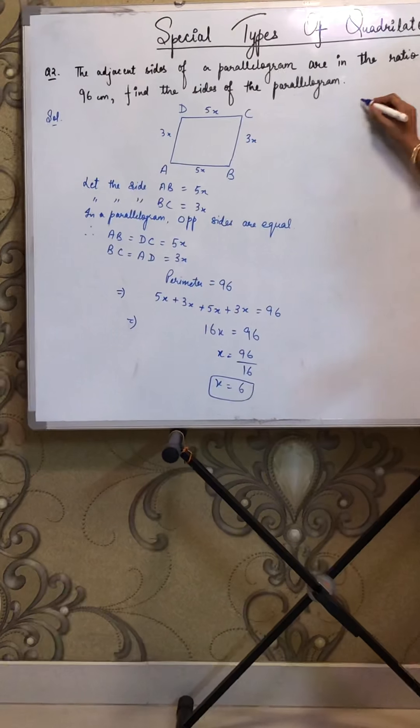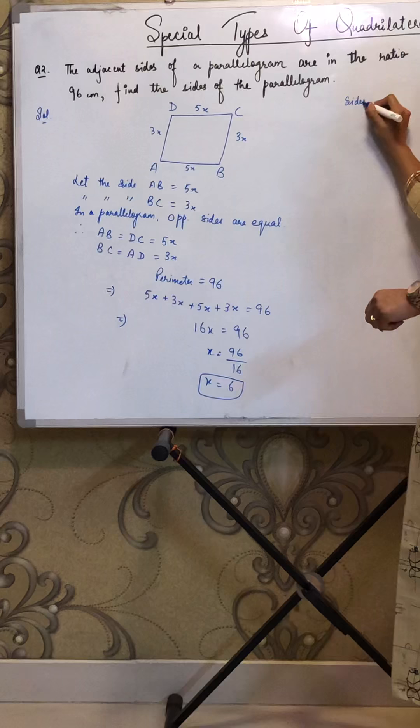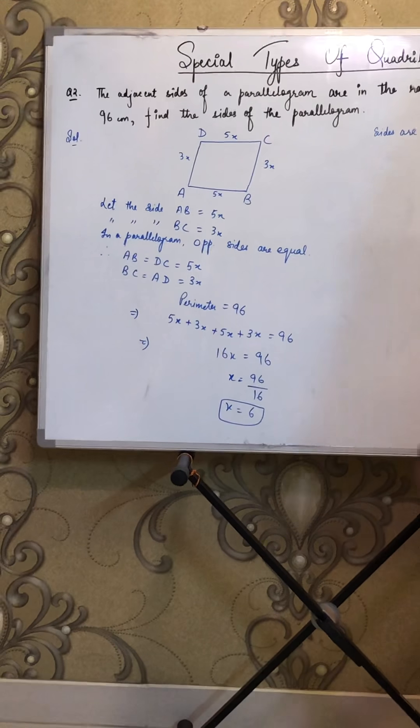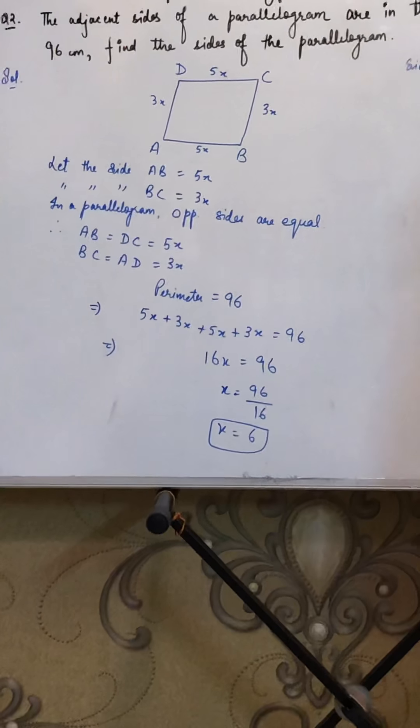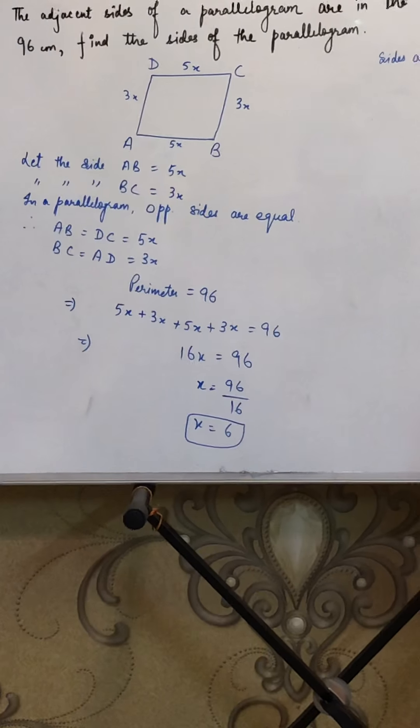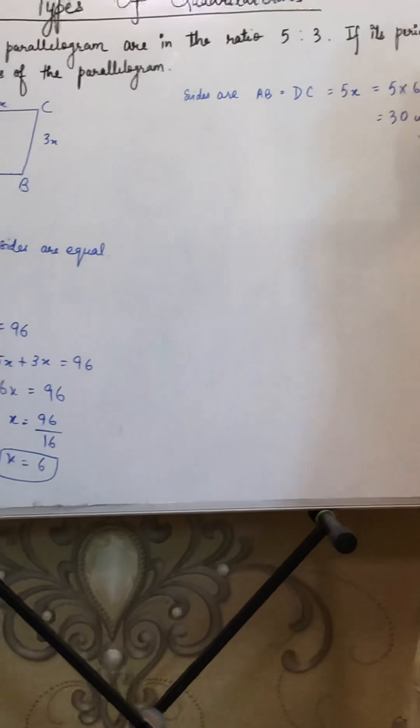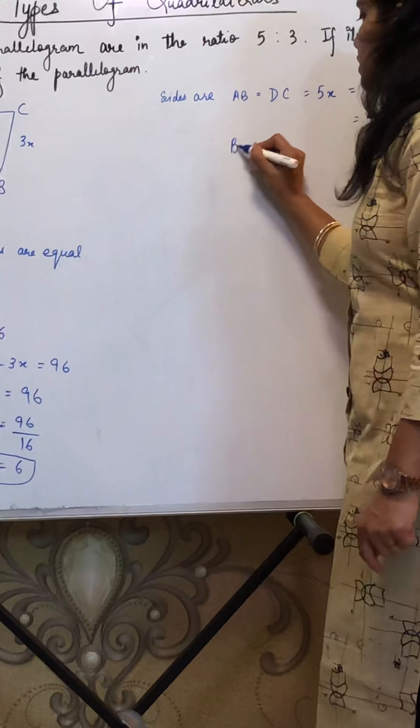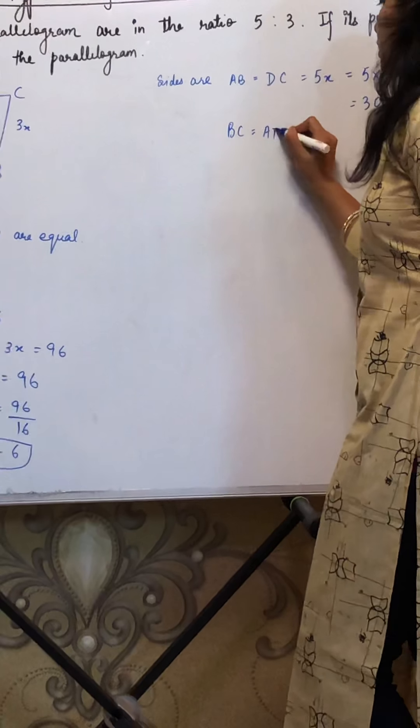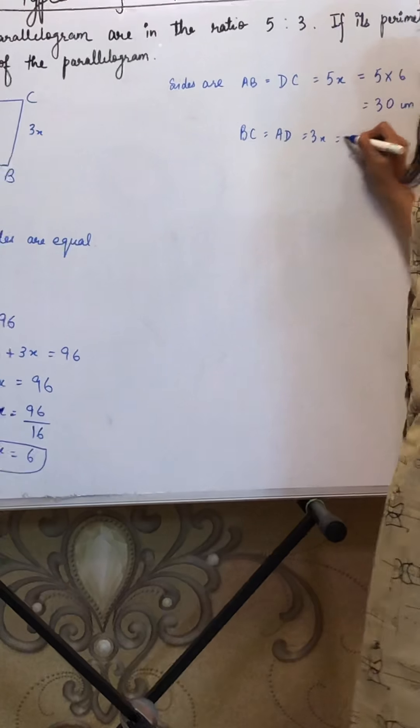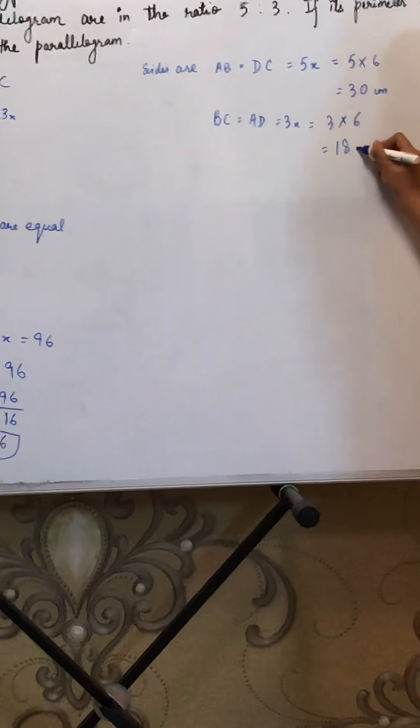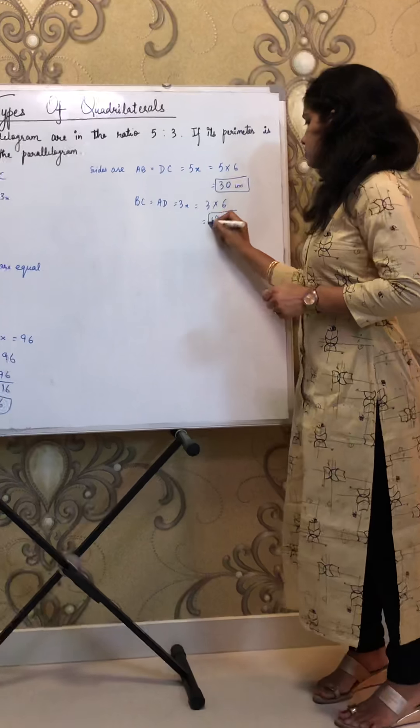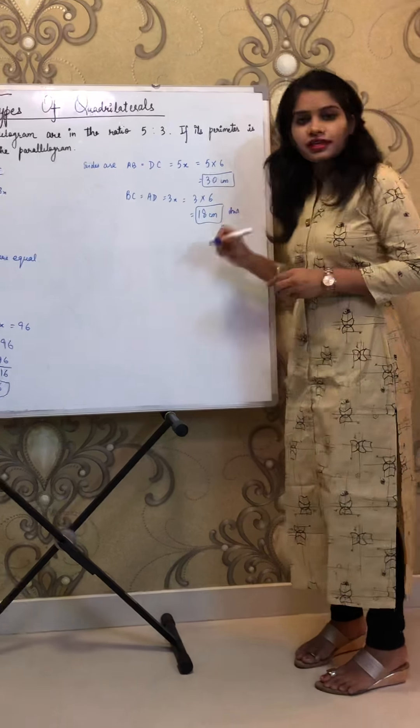And the question is not over here. We have to find the sides. And sides are what? AB equals to DC equals 5X, so that will become 5 into 6, which is 30 centimeter. And again, we have BC and AD, which is 3X, 3 into 6, and you will get 18 centimeter. And this is your answer. Thank you so much.